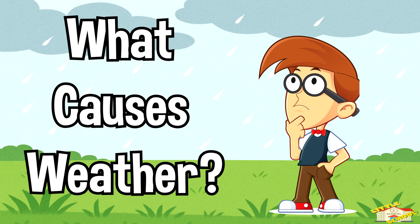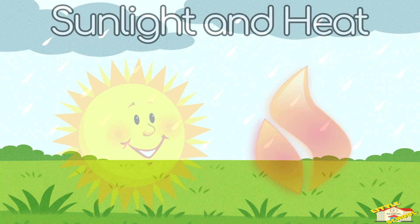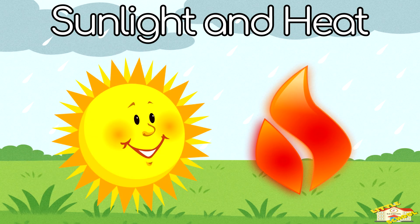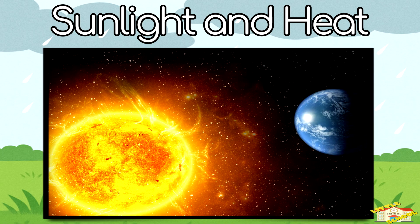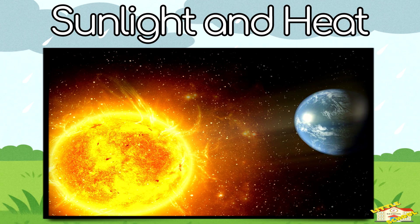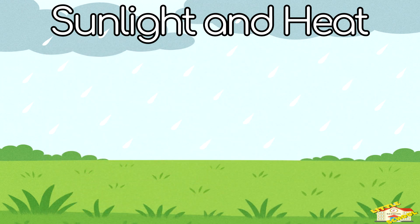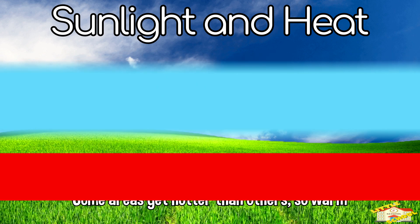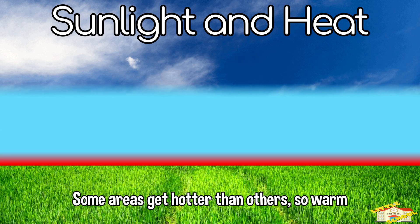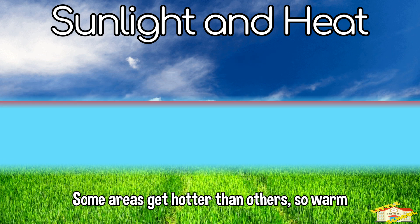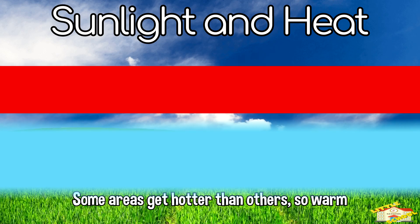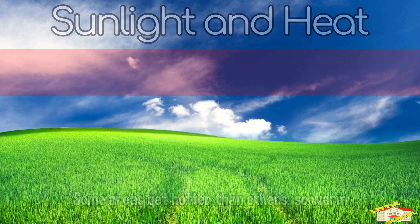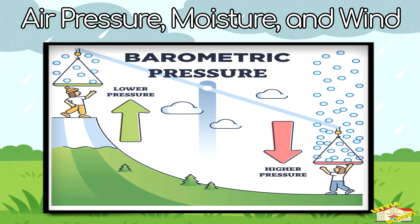What causes weather? Sunlight and heat. The Sun heats up Earth unevenly, especially because of Earth's tilt and rotation. Some areas get hotter than others, so warm air rises and cooler air sinks, creating movement and changes in weather.